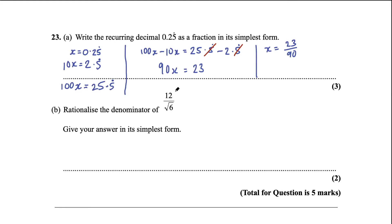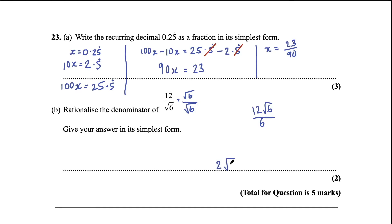Part b says rationalize the denominator of 12 over √6, giving the answer in simplest form. Multiply top and bottom by √6: 12 times √6 is 12√6 on top, √6 times √6 is 6 on the bottom. 12 divided by 6 is 2, so the answer is 2√6. We can't simplify √6 further since no square numbers go into 6, so that is the simplest form.